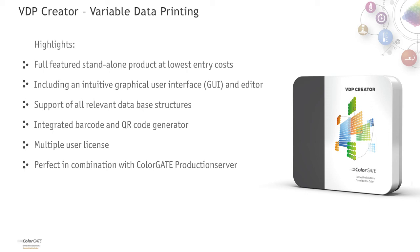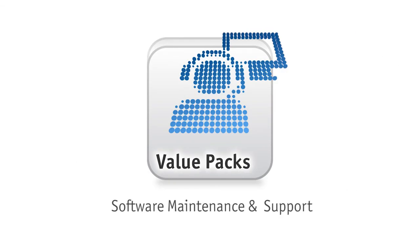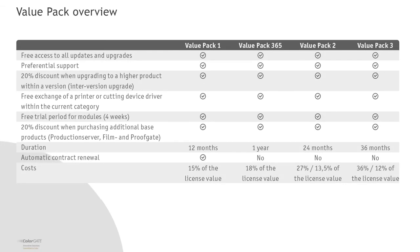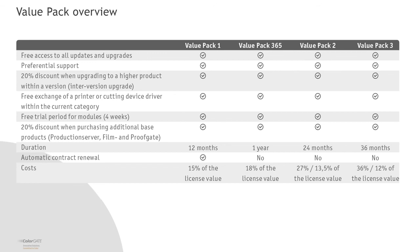With ValuePack, our software maintenance and support contract program, your ColorGate RIP software will always be up to date. There are basically four different options: ValuePack 1, 365, 2 or 3. In general, we recommend a ValuePack 1. Would you like to test our services? Then choose a ValuePack 365, without auto-renewal at slightly higher costs. If you are planning to enter into a lease contract for a printing system, a ValuePack 2 or 3 might be handy because of their long-standing nature — and ValuePack 2 and 3 are the most reasonable options.